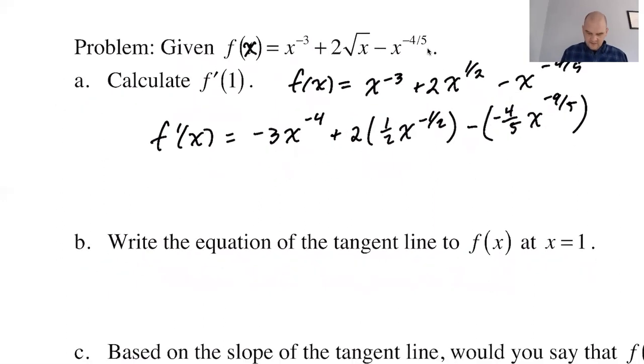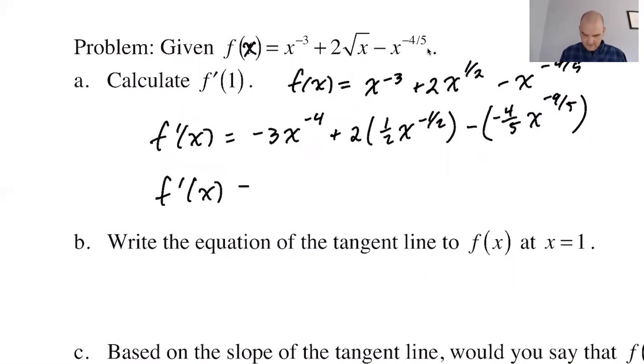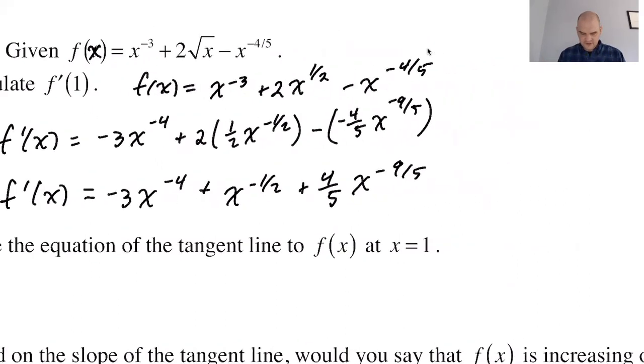We don't really need to simplify this because we just need f prime of 1, but I'm gonna simplify it anyway. So equals negative 3x to the negative 4 plus x to the negative 1/2 plus 4/5 x to the negative 9/5. On my own, I probably would have found this derivative without doing really either of the first two steps. I wouldn't have rewritten it—I would have just thought it through in my head—and I also probably wouldn't have shown that middle step where we're doing 2 times 1/2 x to the negative 1/2. But when you're just starting out, it's fine to show as many steps as you need.